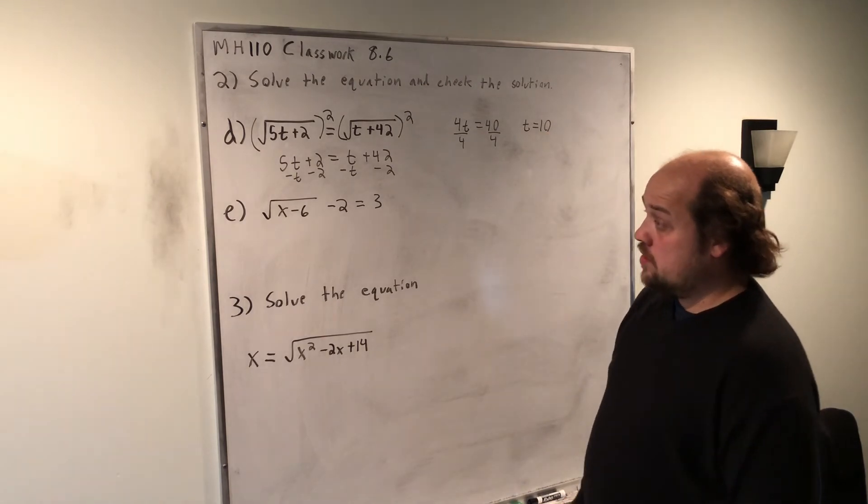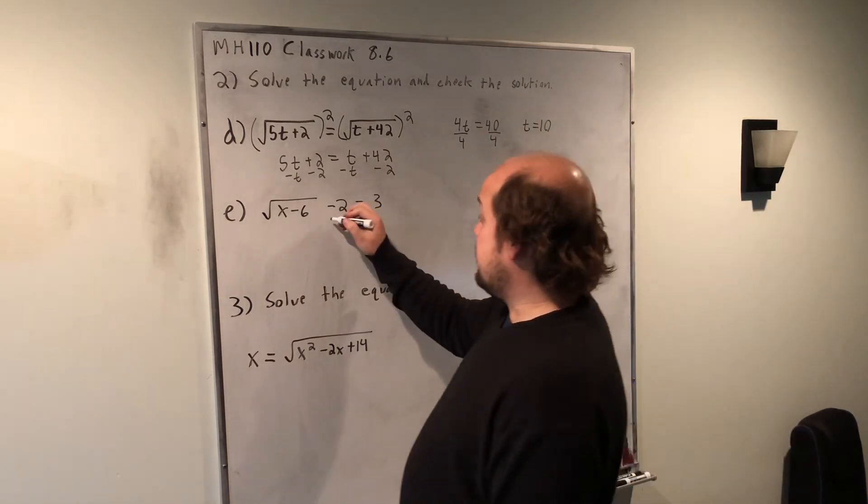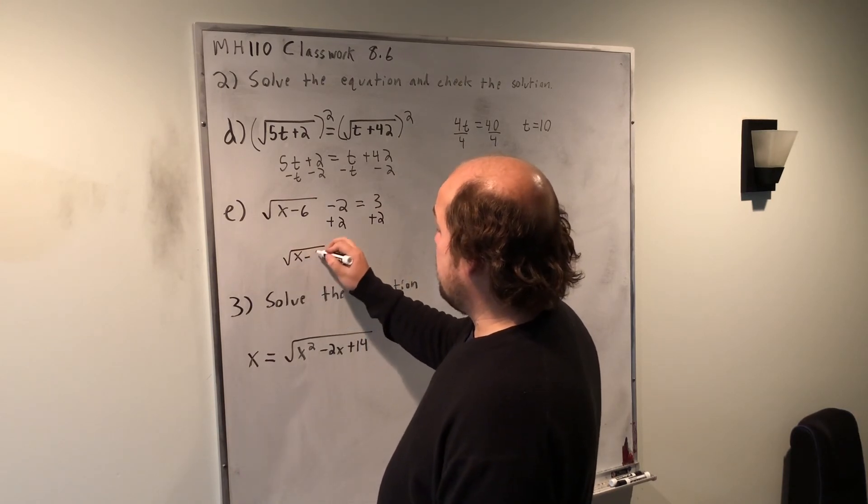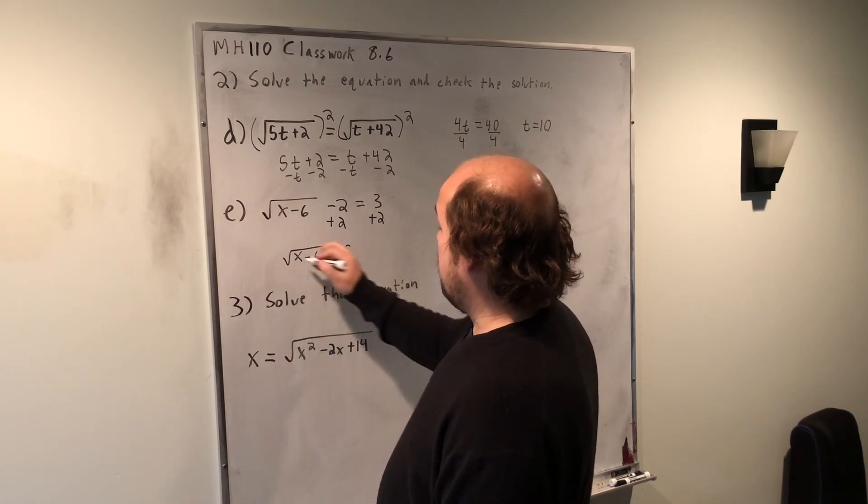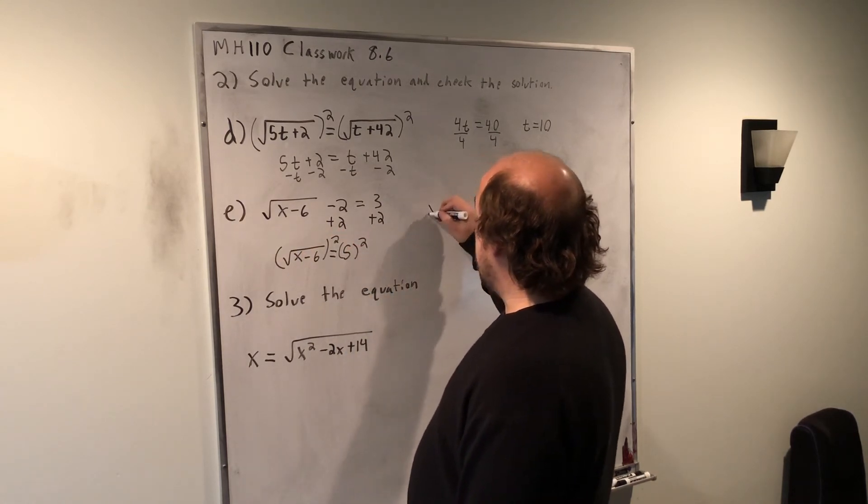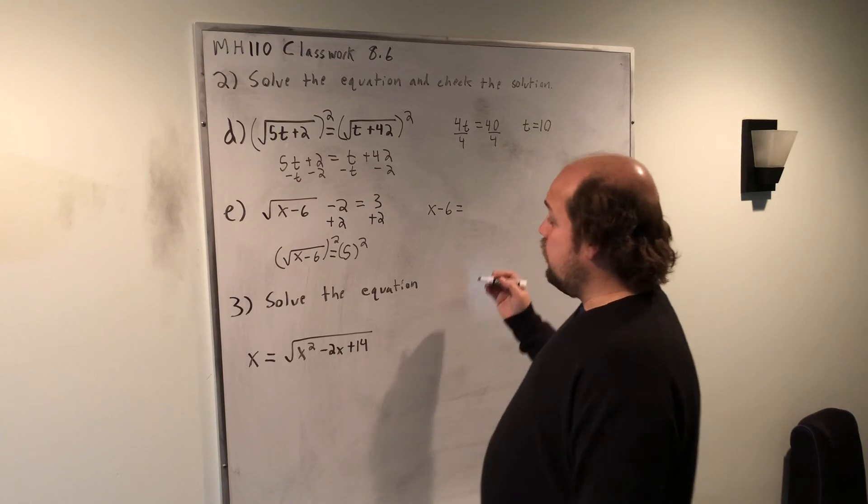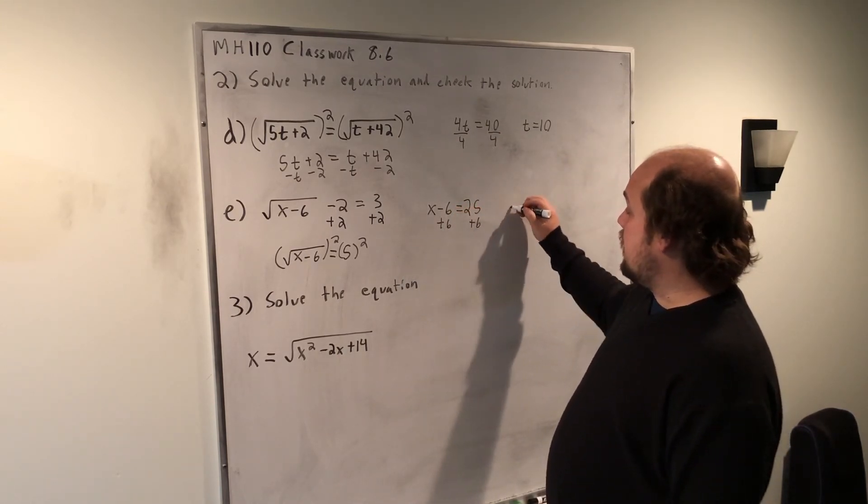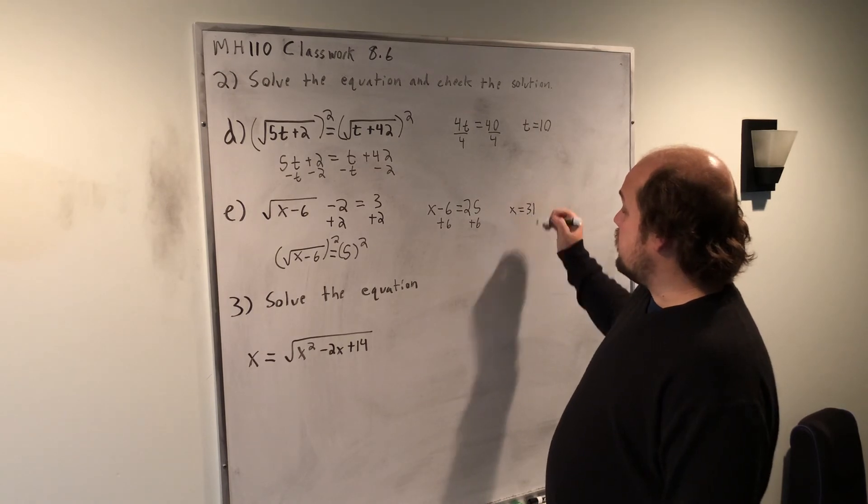So, in part E, I just need to add 2 to each side, then it becomes the root of x minus 6 equals 5. If I square both sides, it becomes x minus 6 outside of the root equals 25. I can then add 6, add 6, and get an answer of x equals 31.